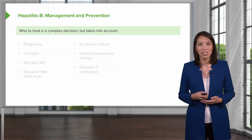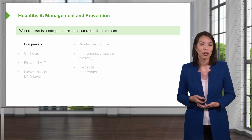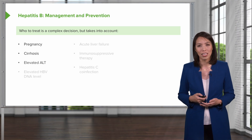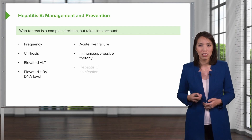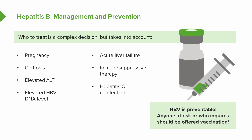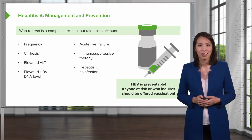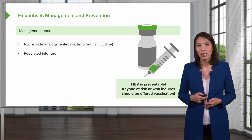Who to treat for hepatitis B is a complicated decision, taking into account factors such as pregnancy, cirrhosis, elevated ALT, high level of DNA replication, acute liver failure, immunosuppression, or co-infection with hepatitis C. Hepatitis B is entirely preventable, so anyone at risk should be offered the vaccine. Treatment options include nucleoside analogs like tenofovir or entecavir, or pegylated interferon.